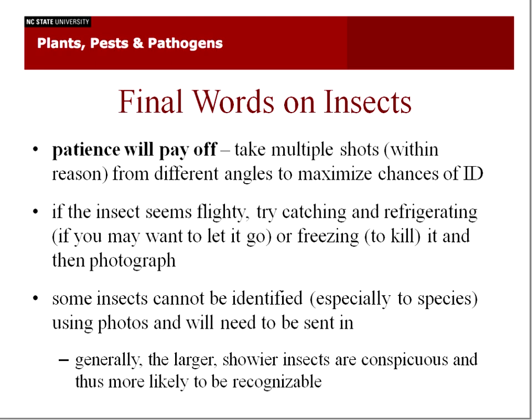Some insects cannot be identified, especially to the species, using photos. Those will need to be sent in if you really need an ID. Generally, larger and showier insects are conspicuous and usually more recognizable — things like wheel bugs or big stink bugs. You can usually just get a picture of the whole organism. Smaller insects are going to be more difficult, but using that macro — the little flower setting on your cameras — is a really good option. Try and get everything in focus with the most magnification as possible.